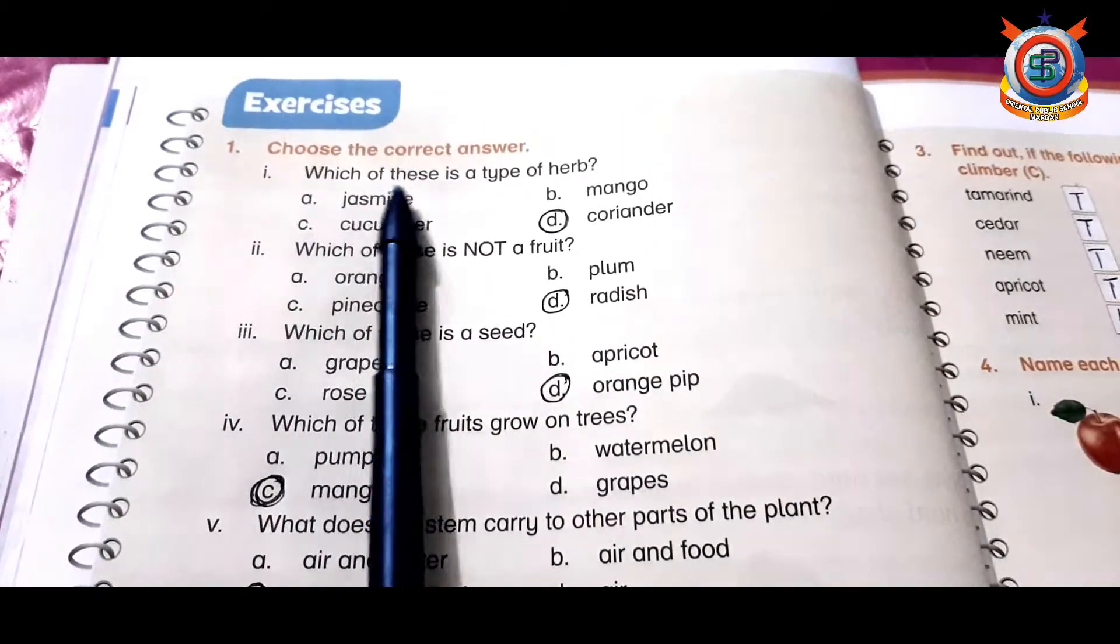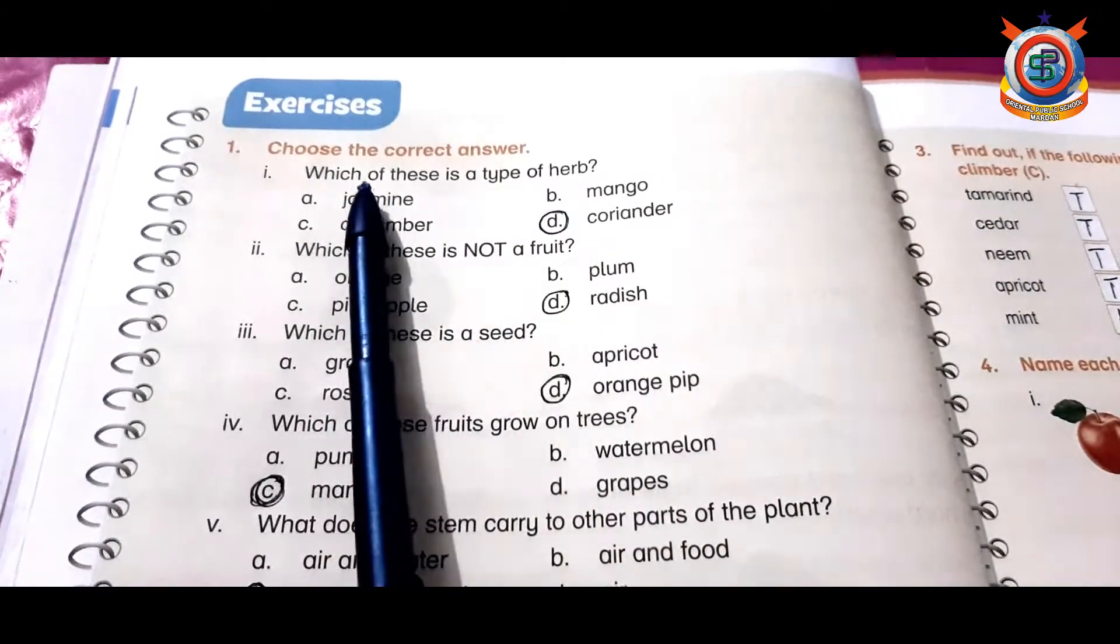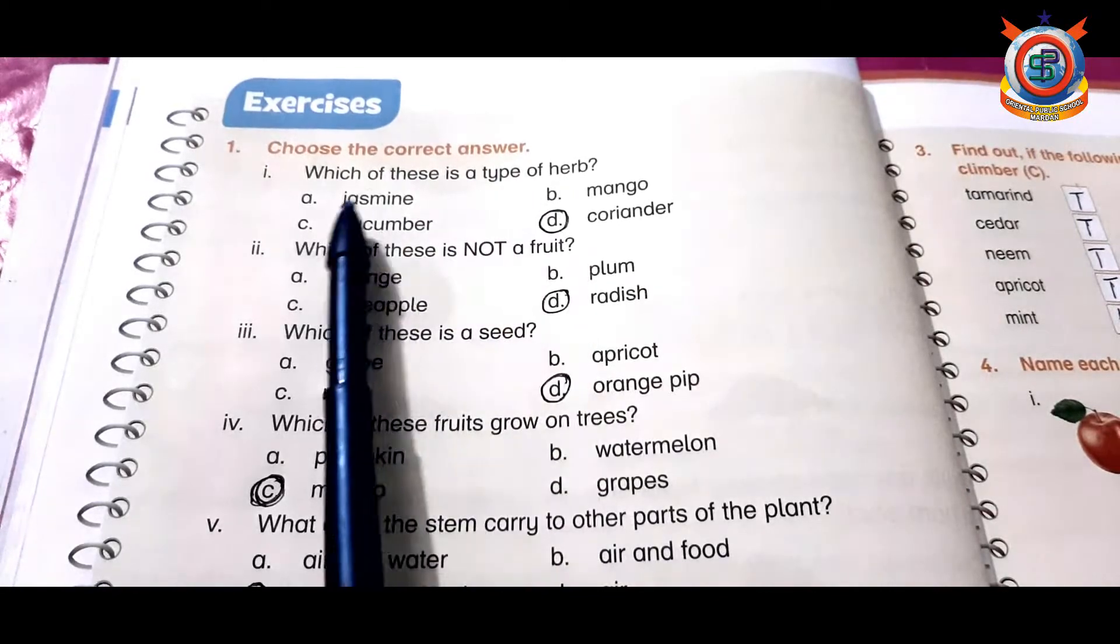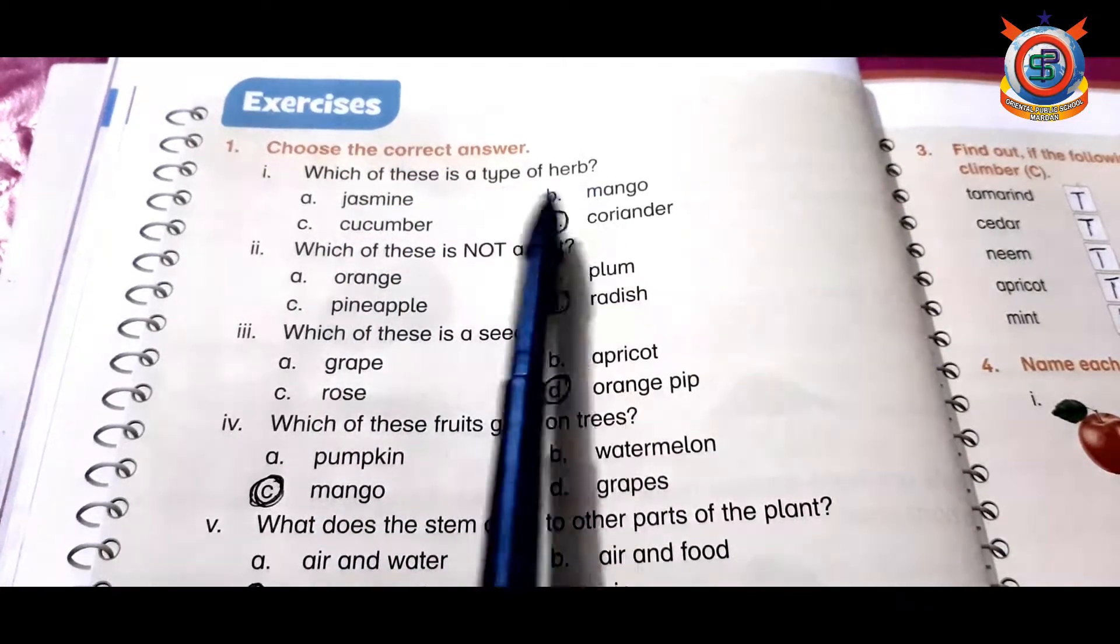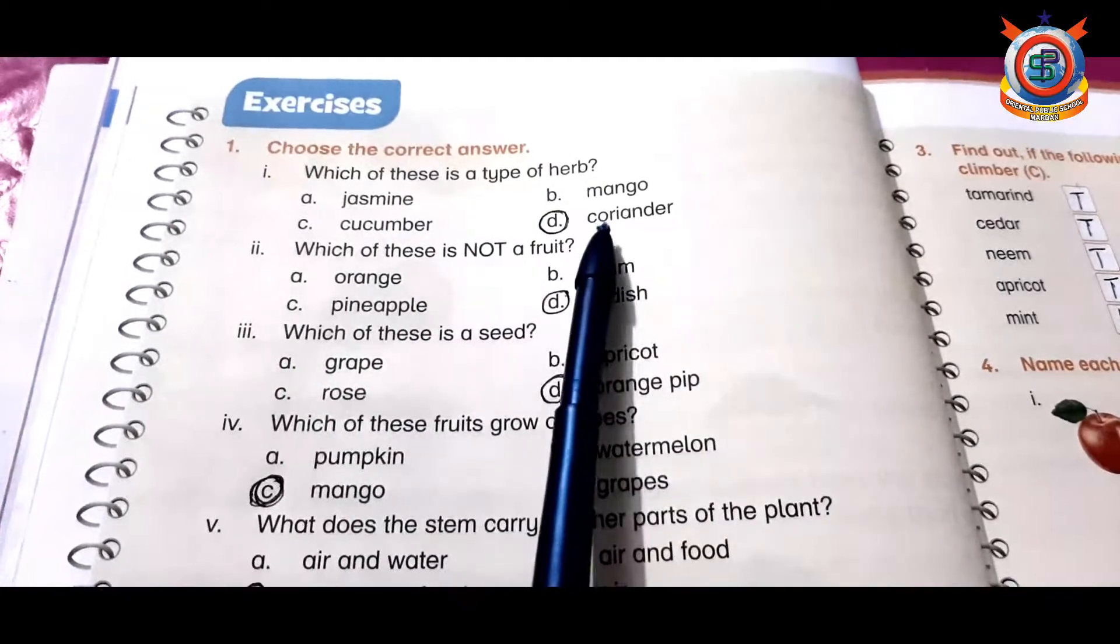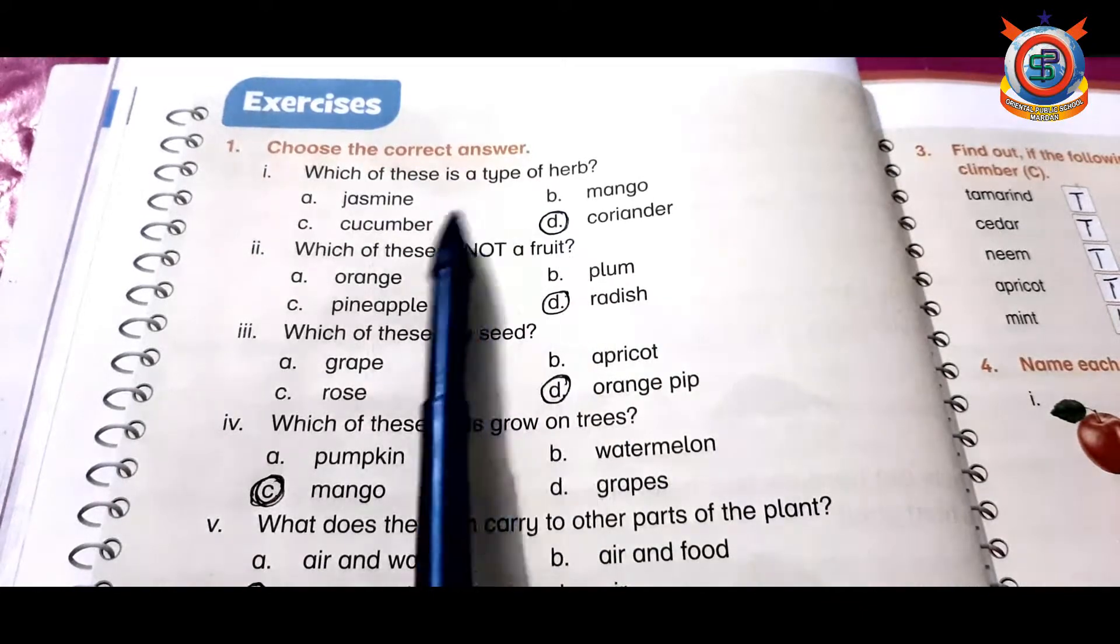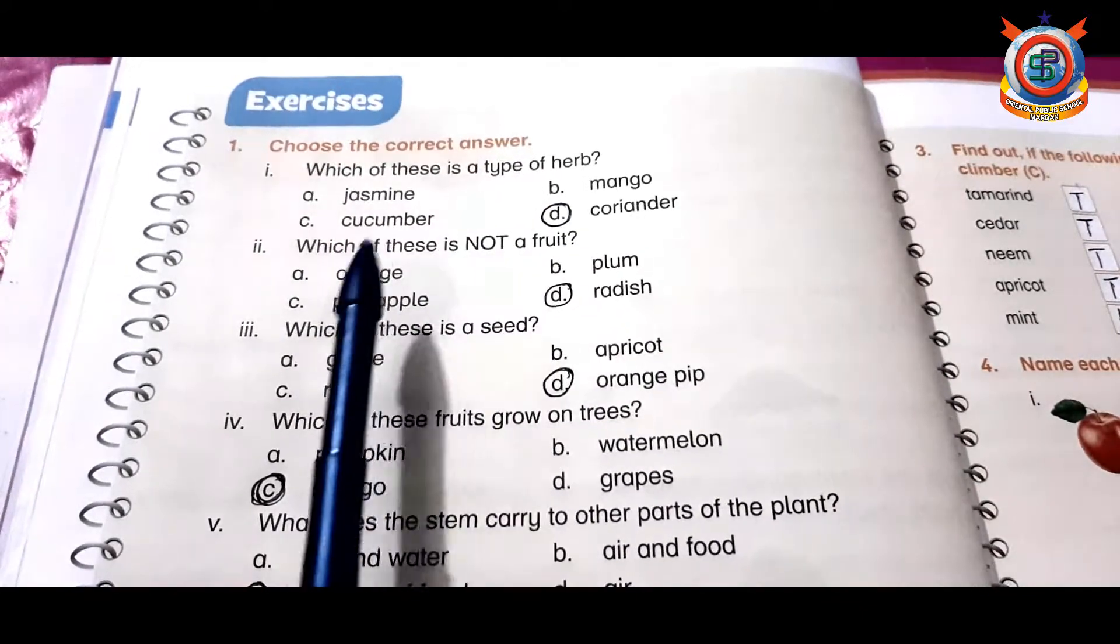Question number one is choose the correct answer. Number one: which of these is a type of herb? Options are jasmine, mango, cucumber, and coriander. The correct option is D, coriander. Which of these is not a fruit? Orange, plum, pineapple, and radish. The correct option is radish.